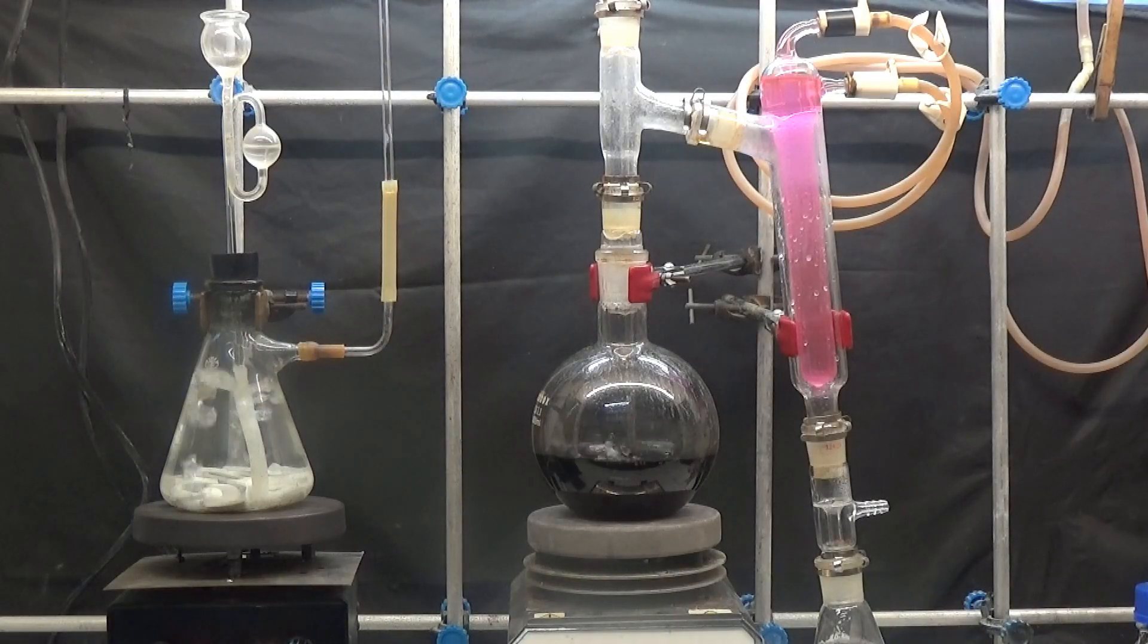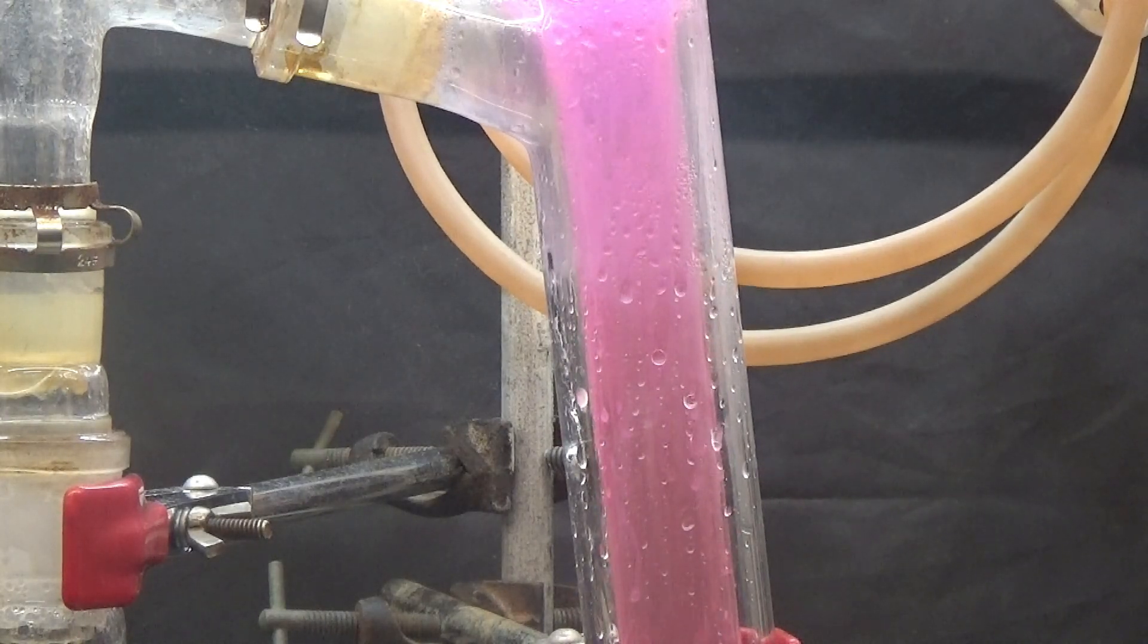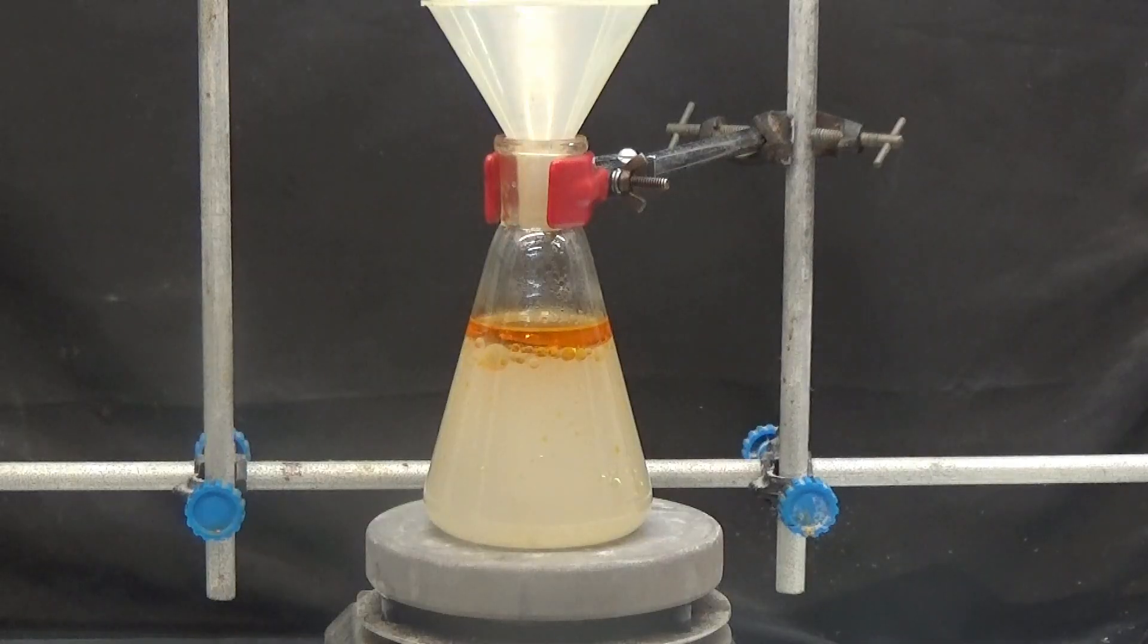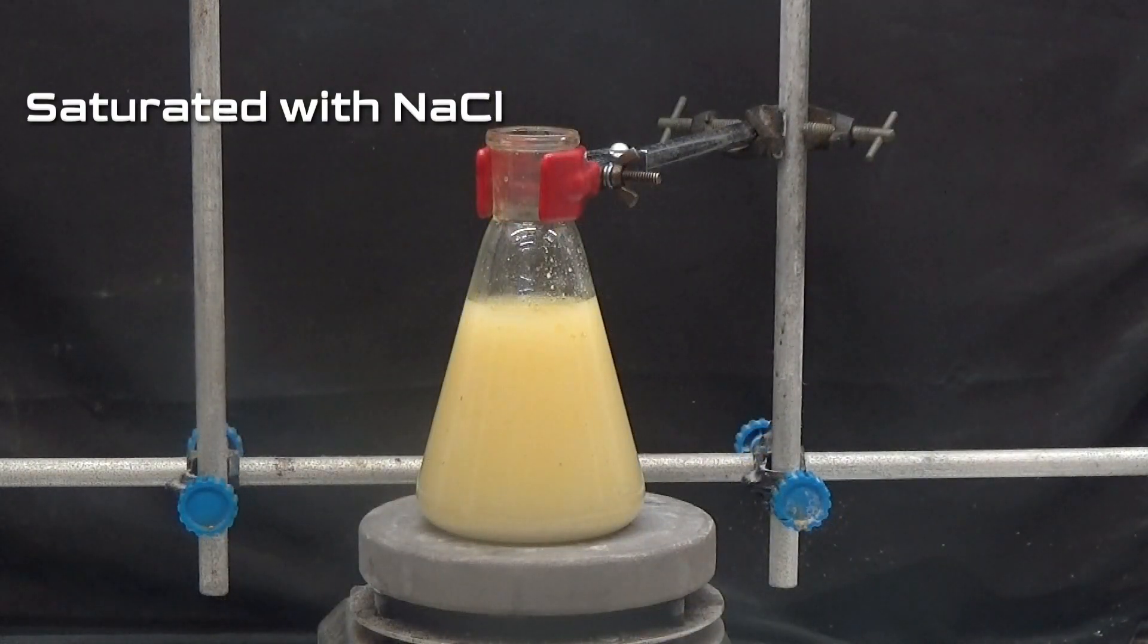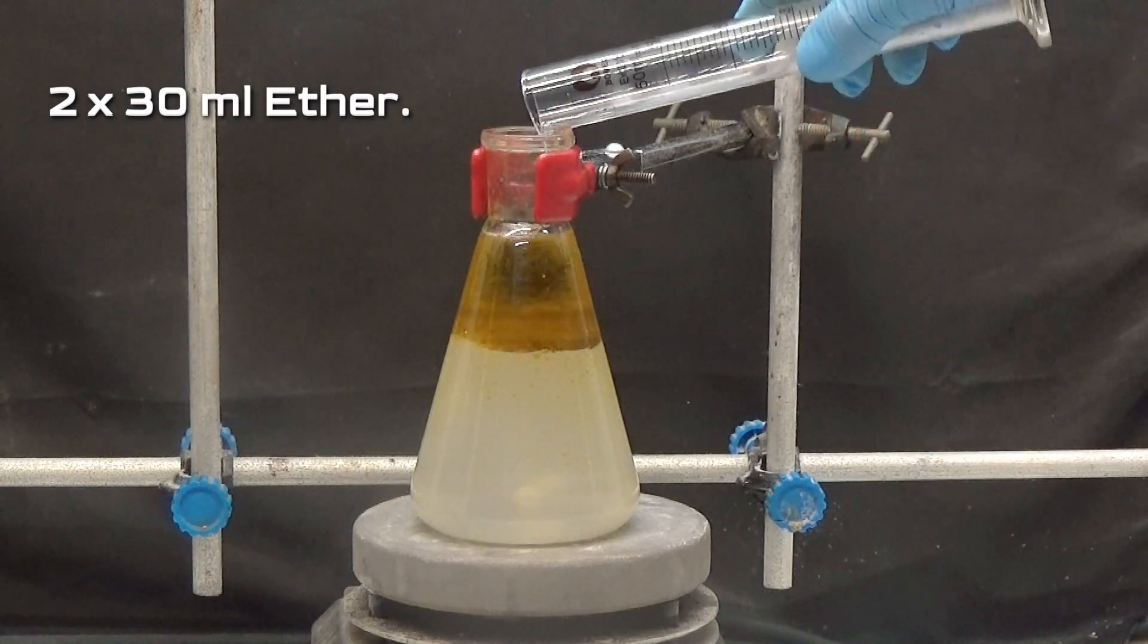Mount the steam distillation and distill a volume of 250 milliliters. The distillate is saturated with sodium chloride. Extract the orthotoluidine with two 30 milliliters portions of ether.